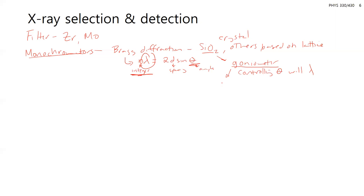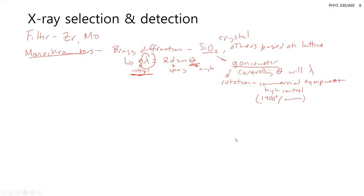Using the goniometer and rotation is key — being able to rotate at a very specific angle and doing this at the right speeds and rates is important. This is typically done with commercial equipment for high control. They might even rotate very fast, 1400 degrees per minute, and having that timing and knowing what wavelength is passing through given a specific rotation takes a lot of optimization, which is why commercial equipment is used.